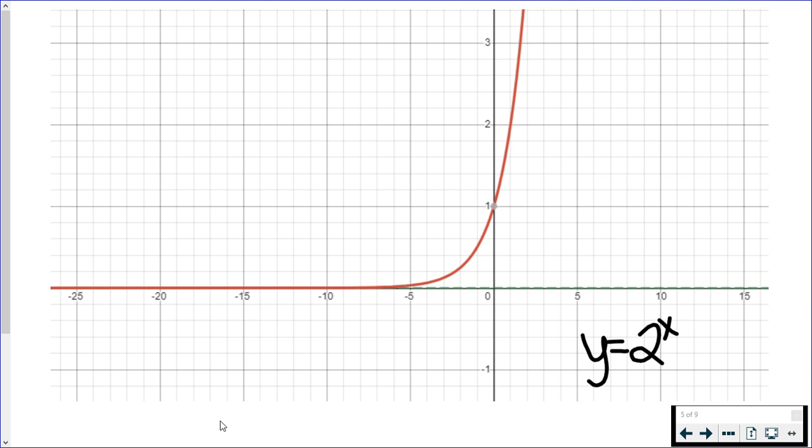This video is going to be a brief explanation of what we call an asymptote. An asymptote is an imaginary line that a graph will get really, really close to, but never actually touch.